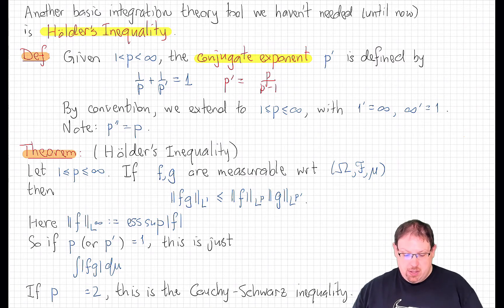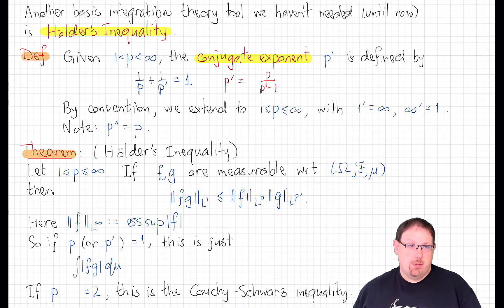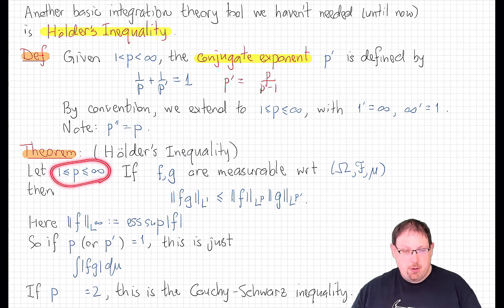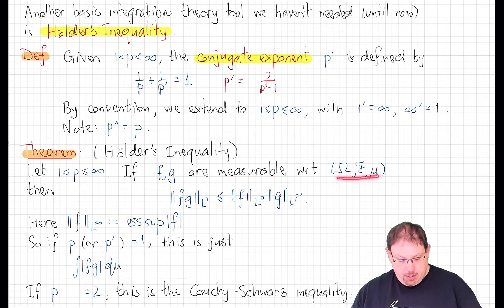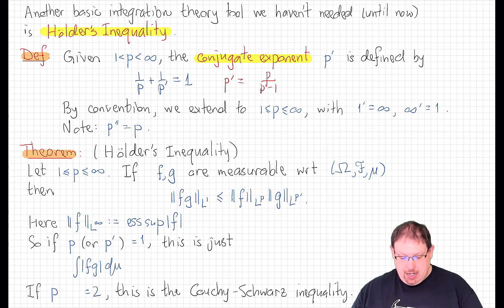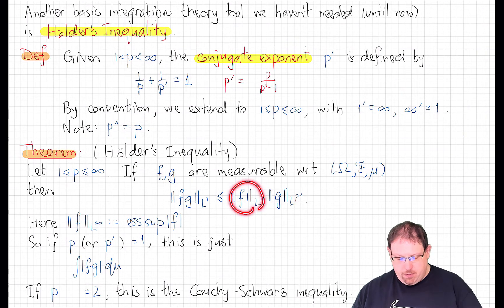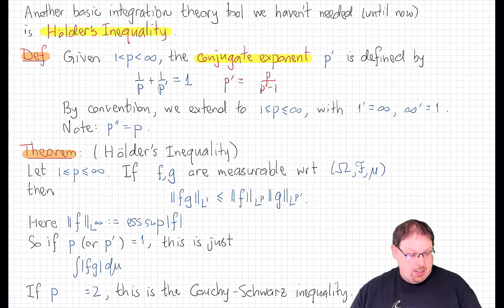Notice with these conventions that for all p between 1 and infinity inclusive, the conjugate exponent of the conjugate exponent is the original p. Hölder's inequality, which holds in an arbitrary measure space, says the following: if p is any exponent between 1 and infinity inclusive, and f and g are any two measurable functions over some measure space, then their product measured in L1 norm is bounded above by the product of the Lp norm of f and the Lp' norm of g, where p and p' are conjugate to each other.